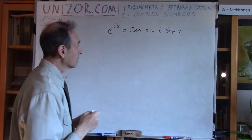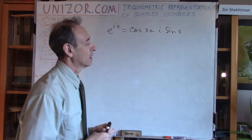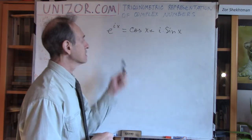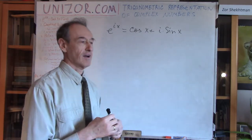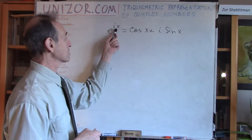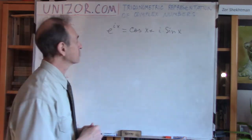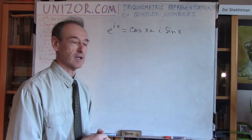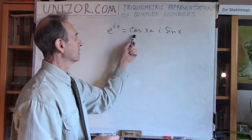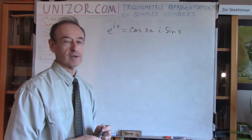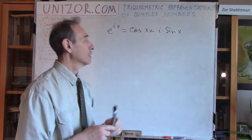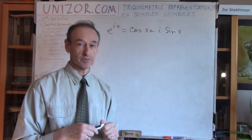This is called Euler's formula. Euler is a Swiss mathematician who worked almost all his life in Russia in, I think, the 18th century. You see, it combines together so many different things that it's hard to believe you can combine them in one formula. First of all, there is an exponential function, but there is an i in the exponent, which is a complex — an imaginary — number. So it connects to number theory and complex number theory. And then you have trigonometric functions, and the canonical representation of the real part and the imaginary part of the complex number.